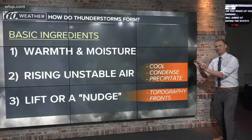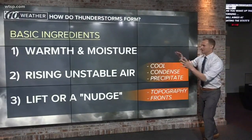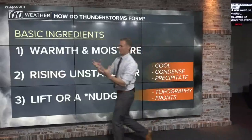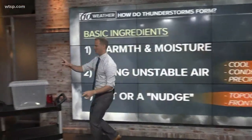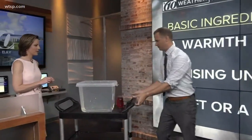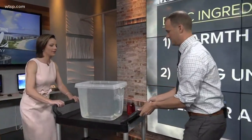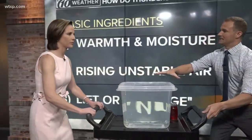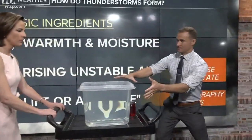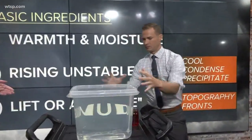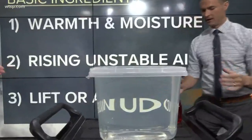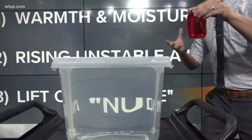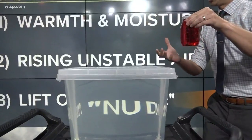We get those. That's kind of a mini form of a cold front, and then you get those ingredients together and you get a thunderstorm. We're gonna make our own little thunderstorms. Can you help me bring this over here? So imagine this water here — this is like the atmosphere. This clear tub is our atmosphere.